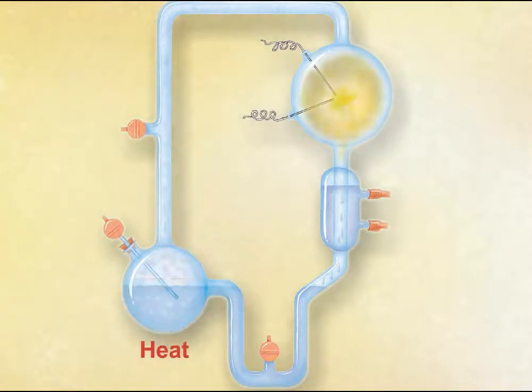The water was heated to form a vapor, and electrical sparks were generated to mimic lightning. This apparatus simulated the possible conditions of the early Earth.